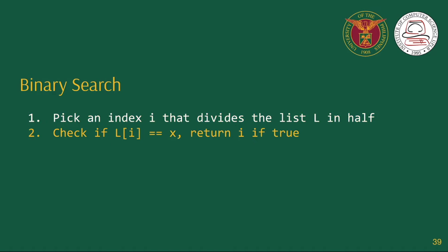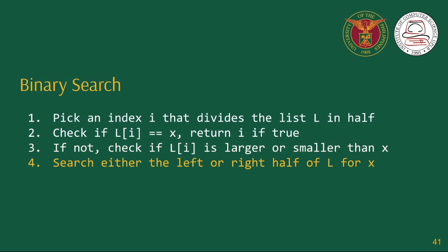Here's the pseudocode of the binary search algorithm. The first step is to pick an index that divides the list in half. We can do this by taking the size of the list and dividing it by two. If the value is found, return the index of the value in the list. If not, determine if the value is larger or smaller than the value at the current index. Then search either the left or the right half of the list. The process continues until the value is found or until we arrive at a sublist of size zero.